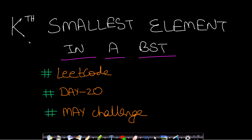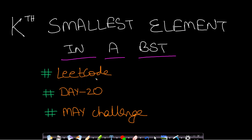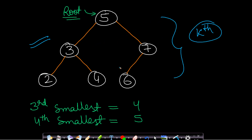Hello guys, welcome back to Tech Dose. In this video we will see how to find the kth smallest element in a BST, which is from LeetCode day 20 of the May challenge. Let us look at the problem statement. We are given a binary search tree and we want to find the kth smallest element. For example, in a given BST, the third smallest element would be 4 and the fourth smallest would be 5.